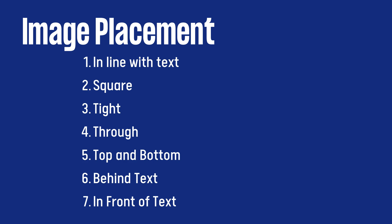Microsoft Word allows you to do seven types or seven options of image placement. We have inline with text, square, tight, through, top and bottom, behind text, and in front of text.